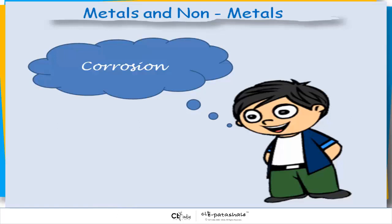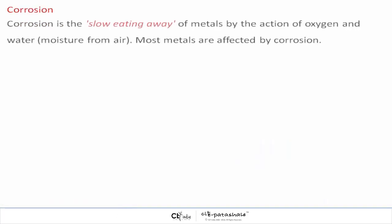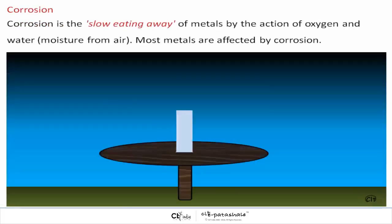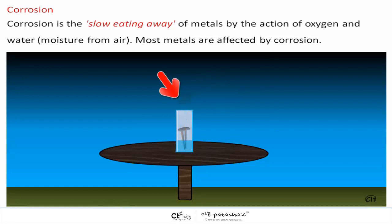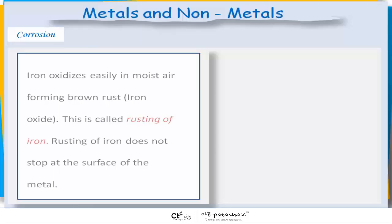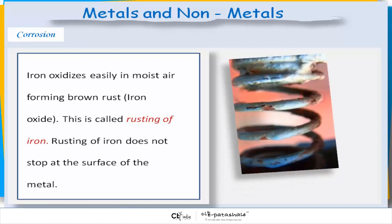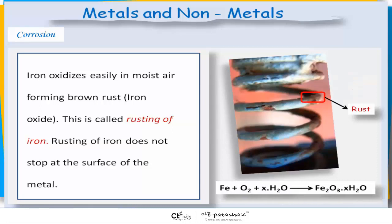Corrosion is a slow eating away of metals by the action of oxygen and water, i.e., moisture from air. Most metals are affected by corrosion. Iron oxidizes easily in moist air, forming brown rust — i.e., iron oxide. This is called rusting of iron.